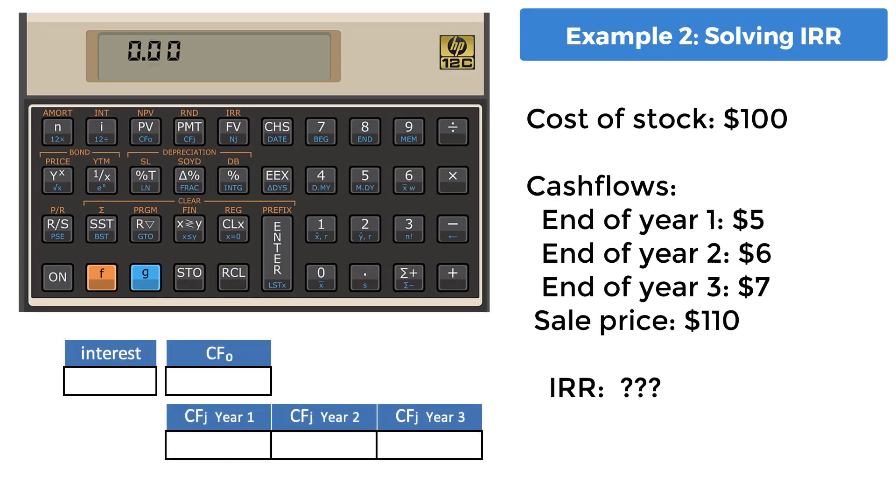Example 2, solving for internal rate of return. Using the same facts from the previous example, let's look at how to solve for IRR. Enter negative $100 as before into CF0 and enter the yearly cash flows as before into CFJ. Note that you do not need to enter the interest rate.